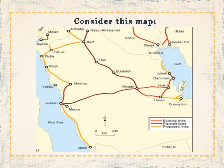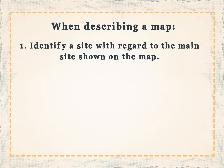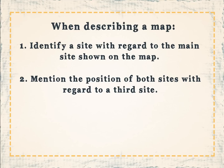Also consider this map. When describing a map: 1. Identify a site with regard to the main site shown on the map. 2. Mention the position of both sides with regard to a third site.